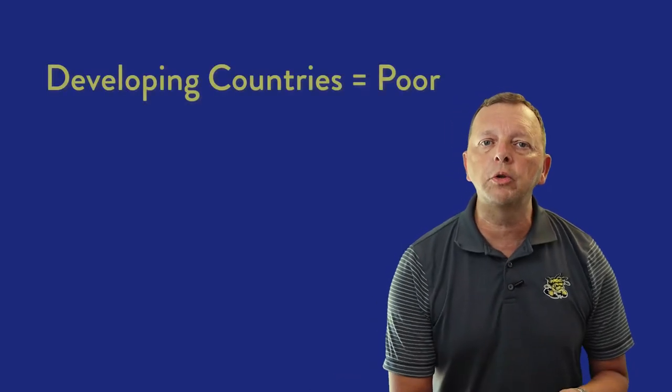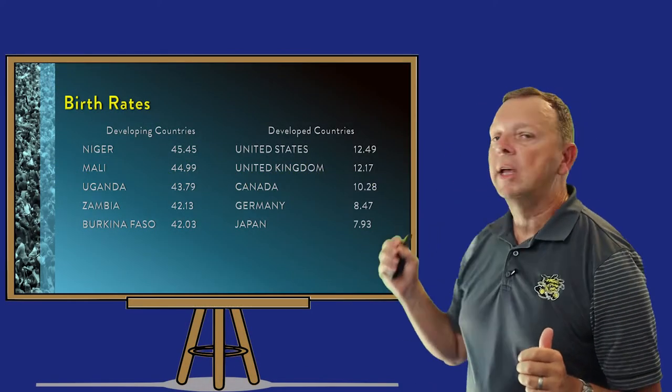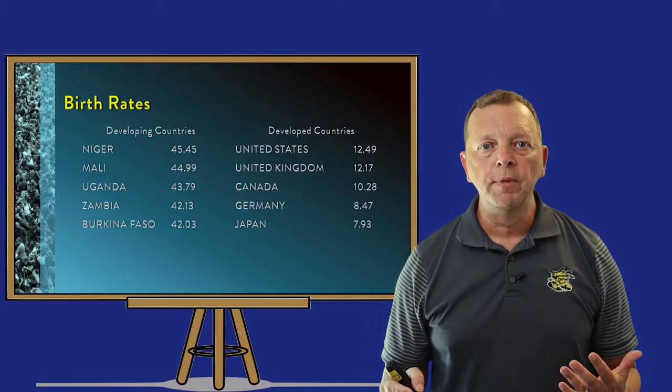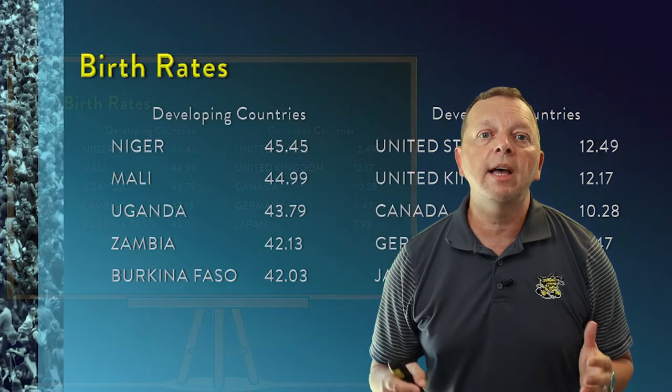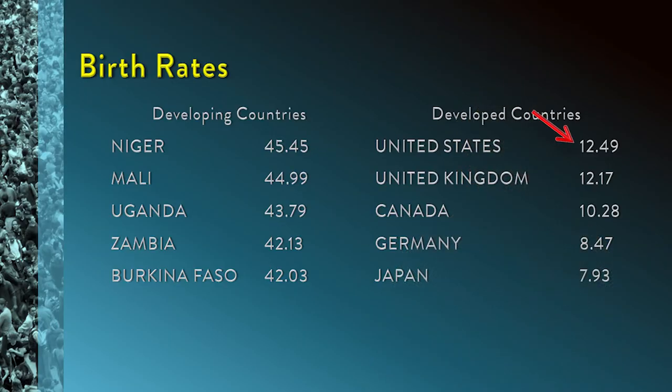Demographics also help us describe which countries are more likely to be rich and which are more likely to be poor. Developing countries are poor countries, and developed countries are rich countries like the United States. If you're in a developing country, you're going to have a much higher birth rate. For example, the African country of Niger has a birth rate of about 45.5, while the United States has a birth rate of just about 12.5, and Japan has a birth rate actually under 8 babies born for every 1,000 population.